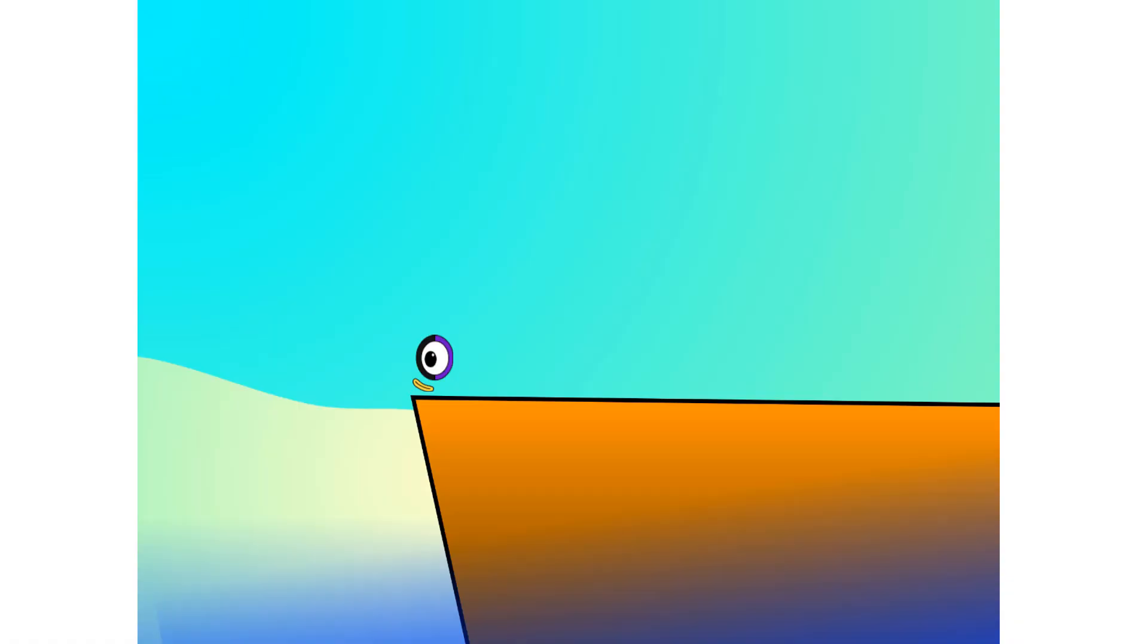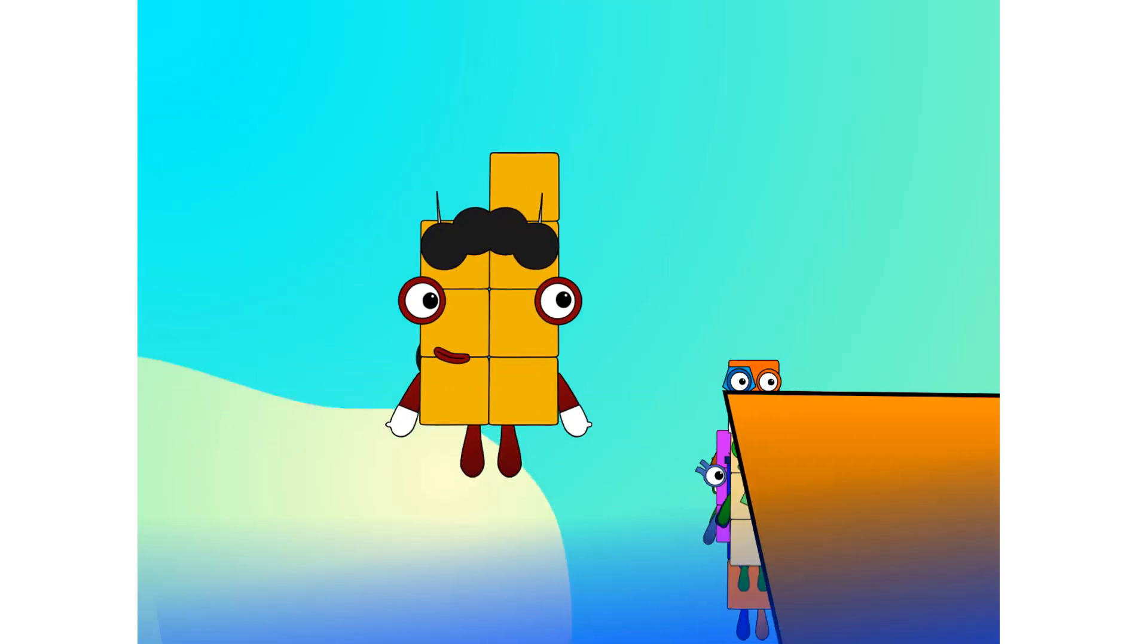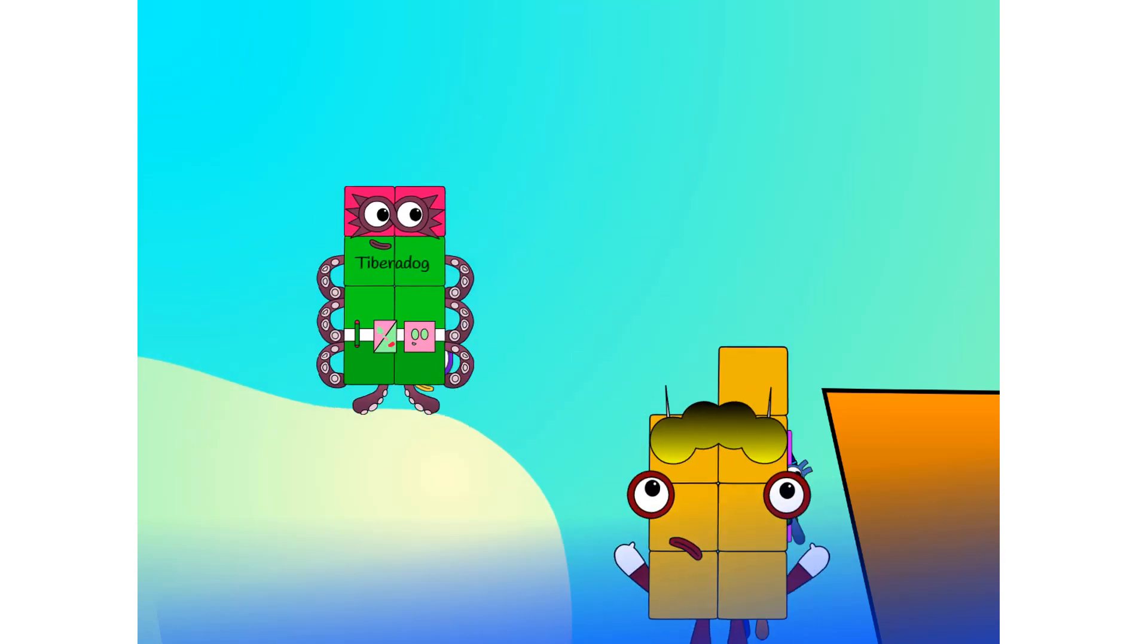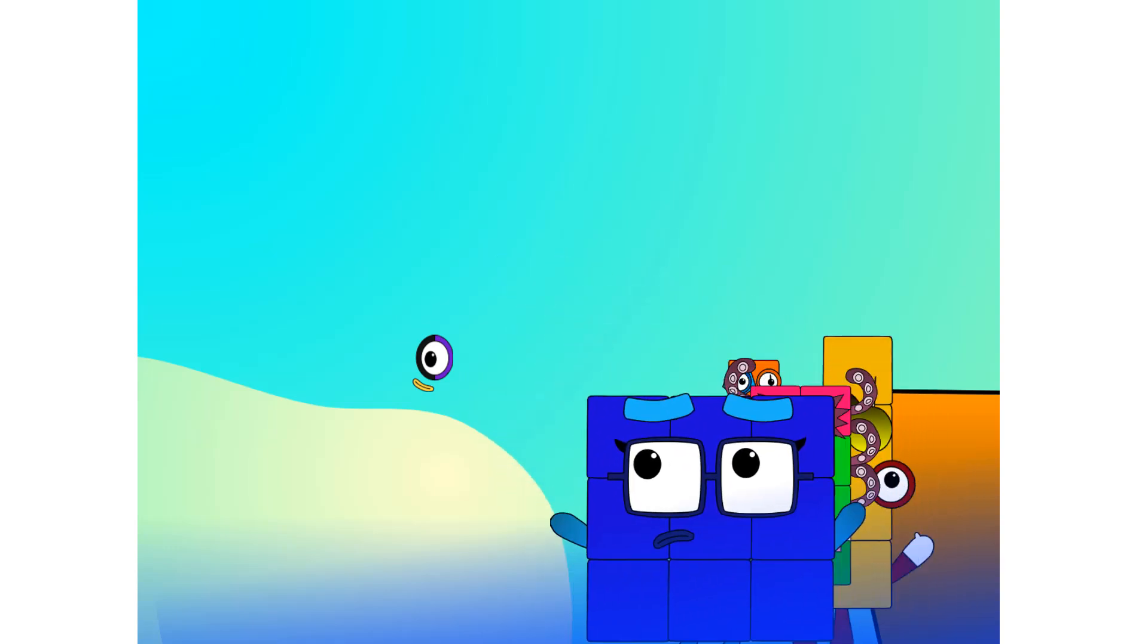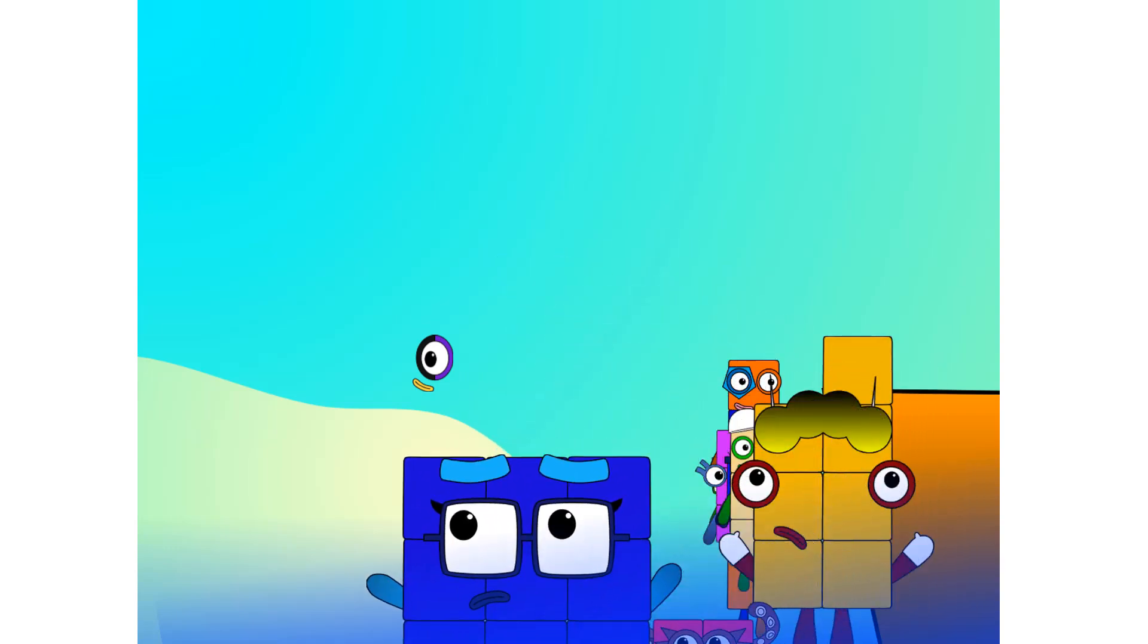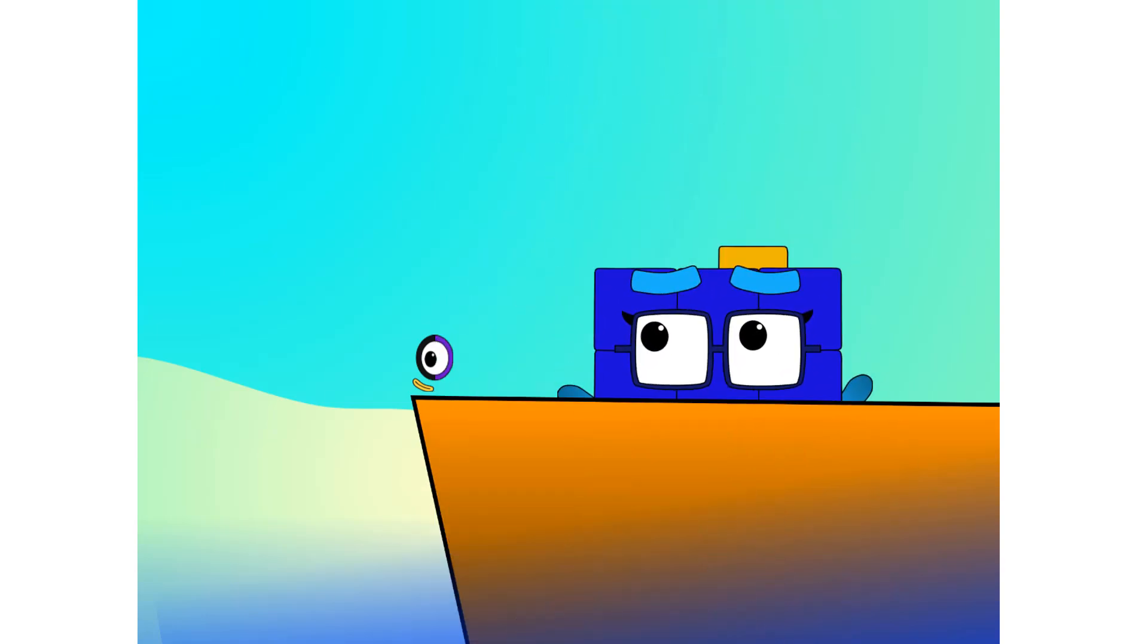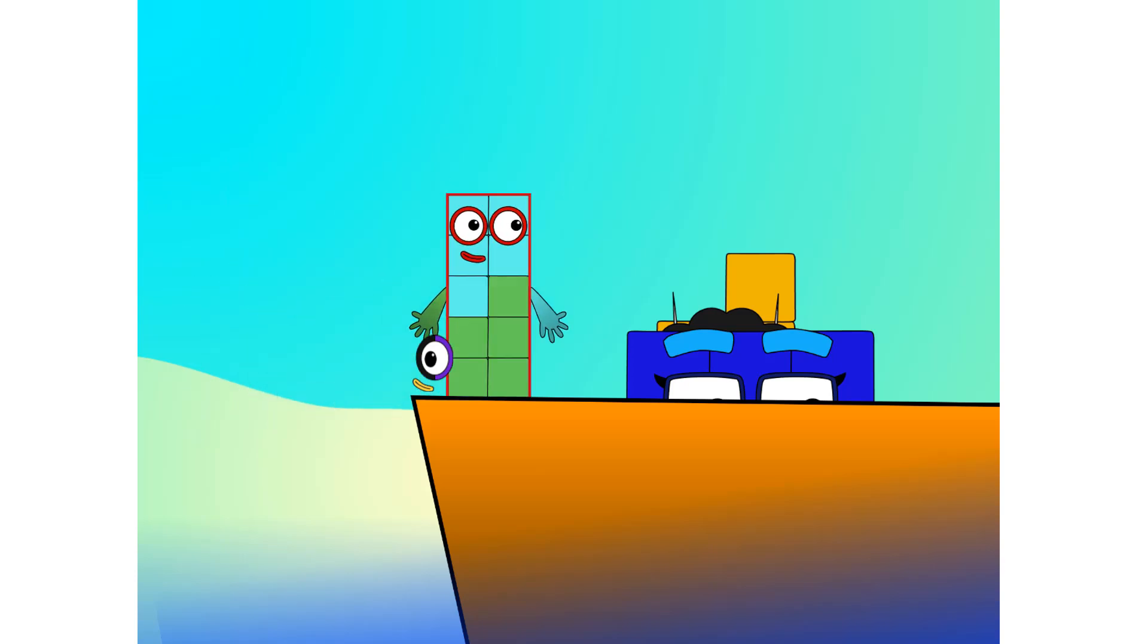All right me hearties, into the boat you go. I approve it. 1 million numbers. Number 1, 2, move along lads, 3, 4, 5, 6, 7, step lively, 8, smartly now move along, 9. Blow me down, numbers overboard! Hang on lads, it's a good thing you know how to swim.